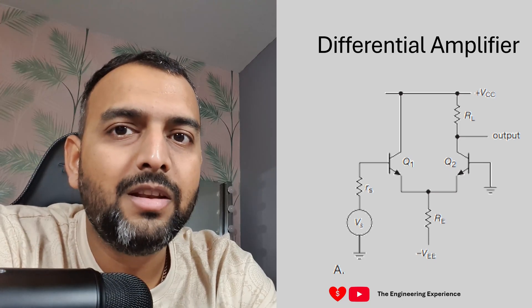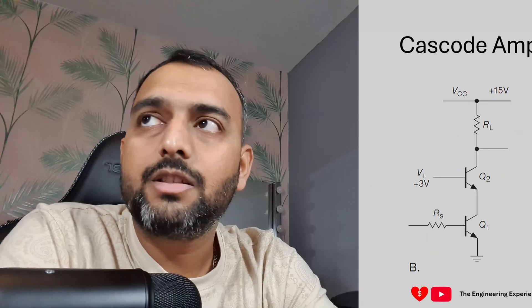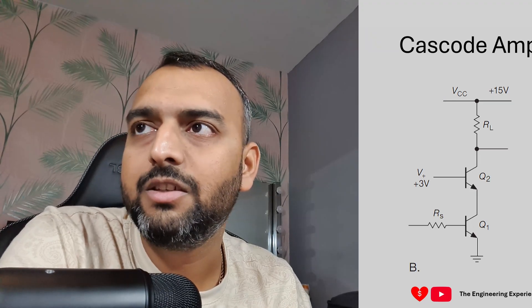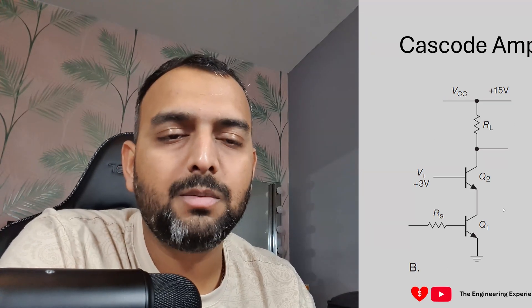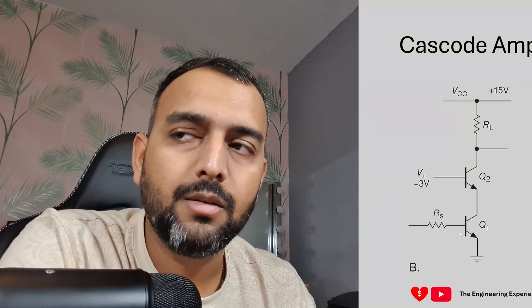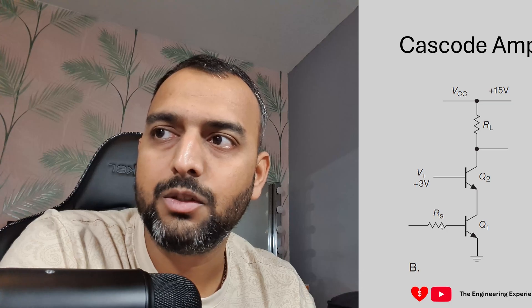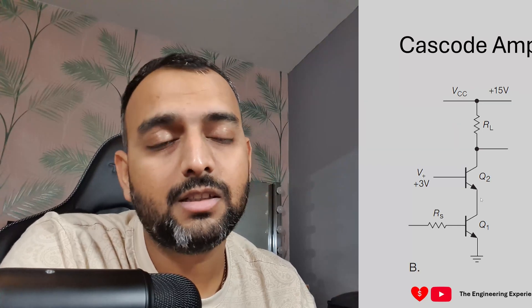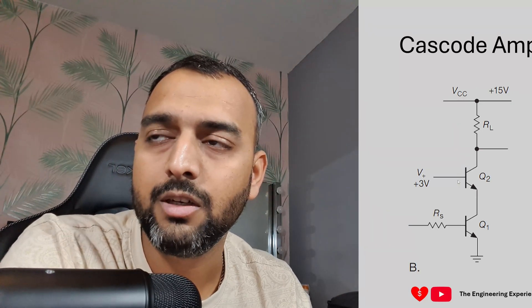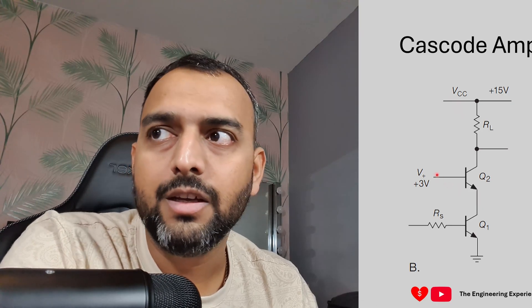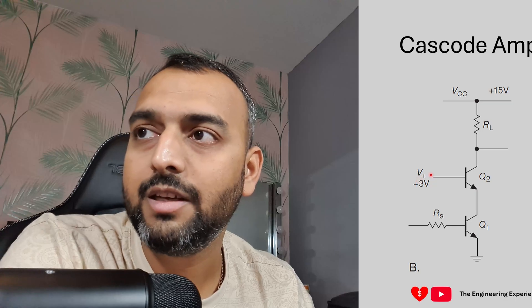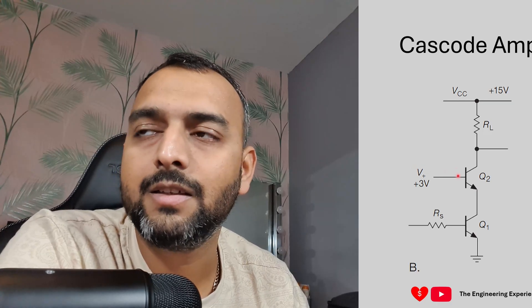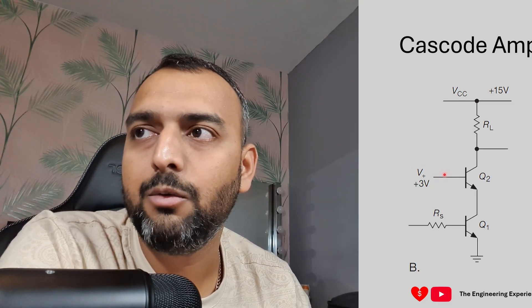The next circuit is a cascode amplifier. In this circuit you have an NPN transistor Q1 connected to a source, with its emitter connected to ground. The collector of Q1 is connected to a second NPN transistor Q2. The base of Q2 is connected to a fixed voltage source — in this case described as a 3-volt source. Because this is a very low impedance source driving the base of Q2, this point is going to be fixed at 3 volts.